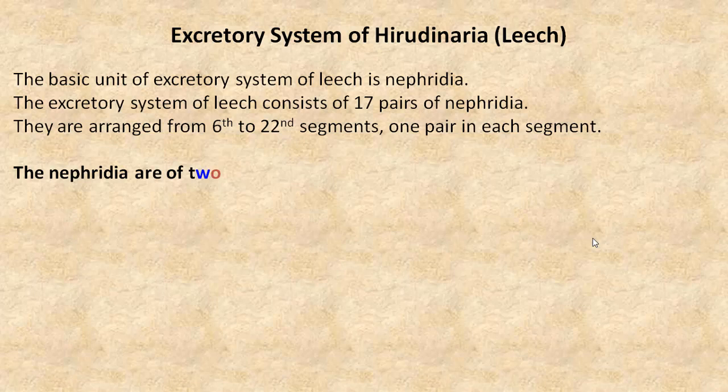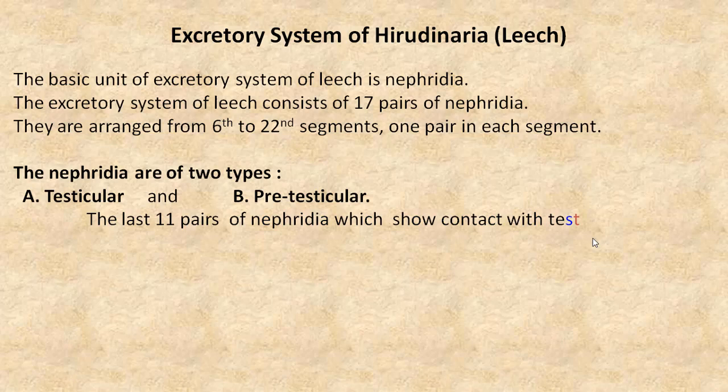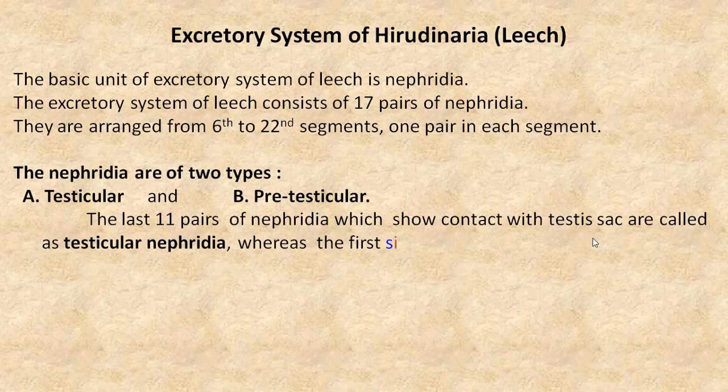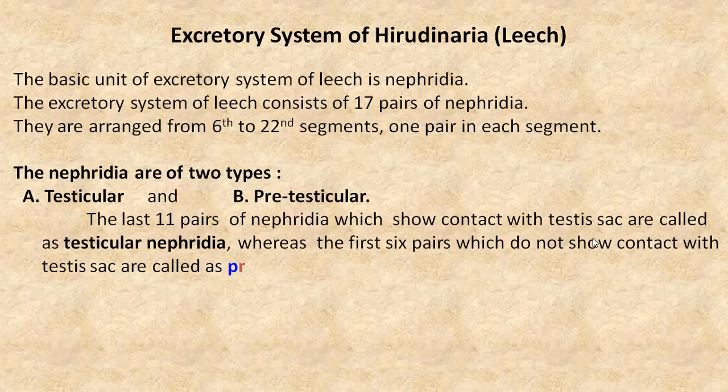The Nephridia are of two types: testicular and pretesticular. The last 11 pairs of Nephridia which show contact with the testis sac are called testicular Nephridia, whereas the first 6 pairs which do not show contact with the testis sac are called pretesticular Nephridia.